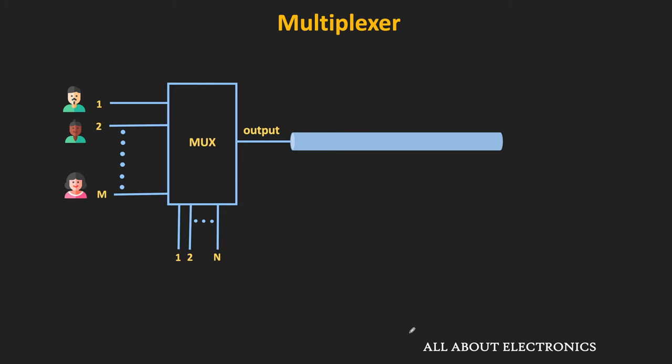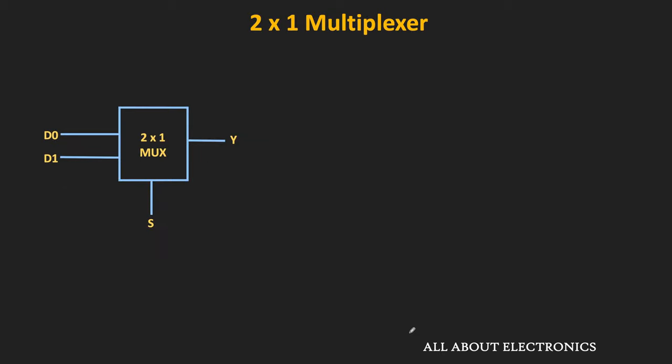Let us see the logic circuit of the multiplexer, starting with the 2-to-1 MUX. This 2-to-1 multiplexer has two inputs and one output. And to select any one of the two inputs, it has one selection line.